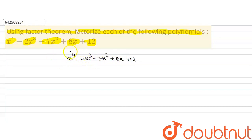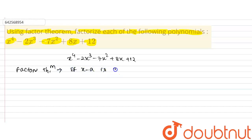We will factorize this by using the factor theorem. This is a biquadratic polynomial, so the degree is 4 and there will be 4 factors. According to the factor theorem, if x minus a is a factor of polynomial f(x), then f(a) is equal to zero.